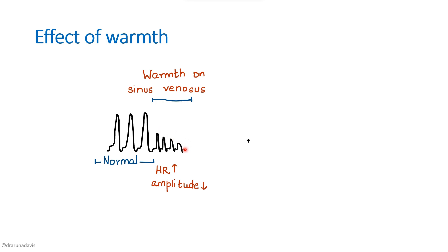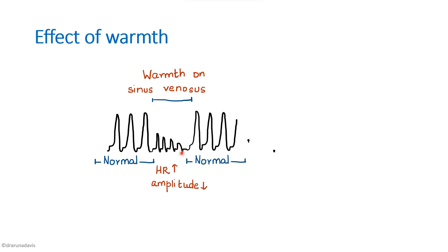When the heart rate increases, the filling time of the ventricles is reduced. So the end diastolic volume decreases, which means the initial length of the muscle fiber decreases. According to Starling's law, the force of contraction also decreases, which is why the amplitude has decreased. This decrease in amplitude is a secondary effect, whereas the increase in heart rate is a primary effect.